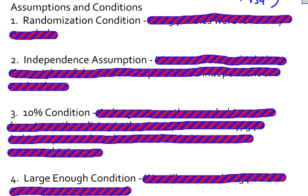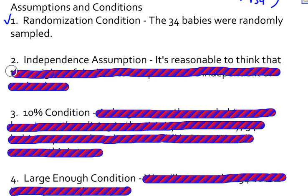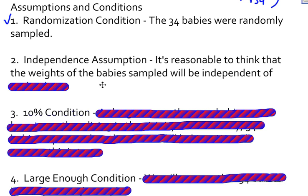Let's look at our four assumptions and conditions. The first one is the randomization condition. Either we have collected a random sample that represents the population, or we know our sample represents the population. This condition checks out because the 34 babies were randomly sampled. Next is the independence assumption: is it reasonable to think that those 34 babies have weights that are independent of each other? Yes — these babies have no association with each other, so it's reasonable to assume independence.